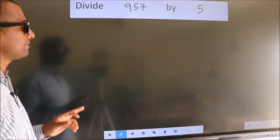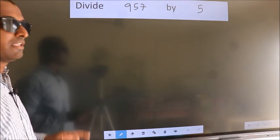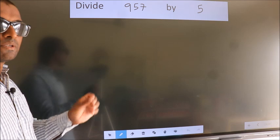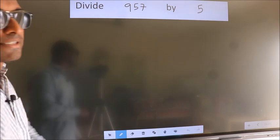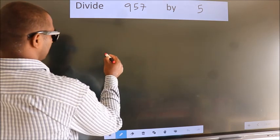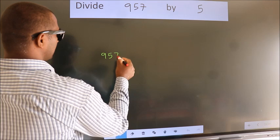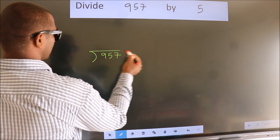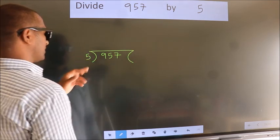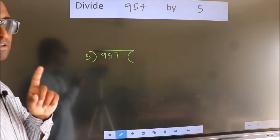Divide 957 by 5. To do this division, we should frame it in this way: 957 here, 5 here. This is your step 1.